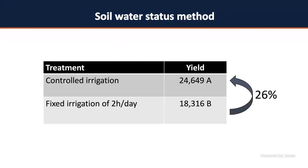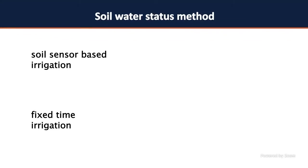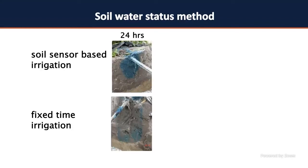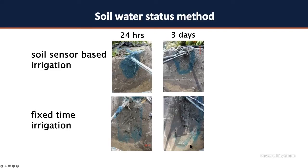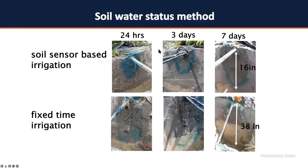We also injected blue dye into the soil to visualize water movement. After 24 hours, dye under fixed irrigation was already approaching the second soil layer. After seven days, under soil moisture sensor management the dye was found at 16 inches depth, but under fixed irrigation the dye had moved to 38 inches — beyond detection range. If that blue dye represents nitrogen fertilizer, you are simply leaching nutrients away from the root zone.